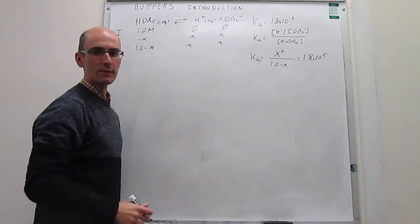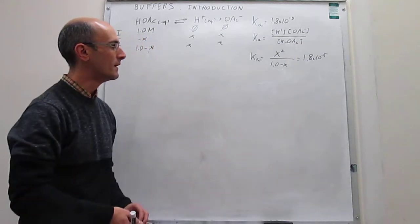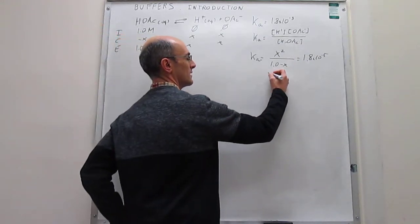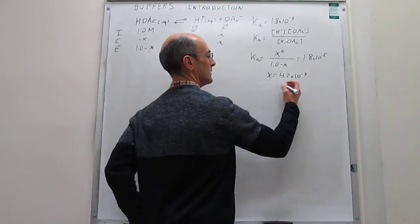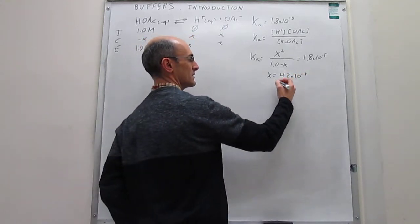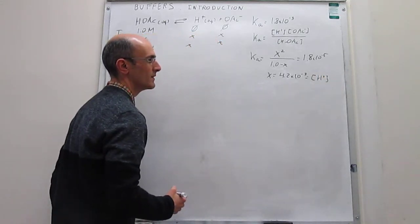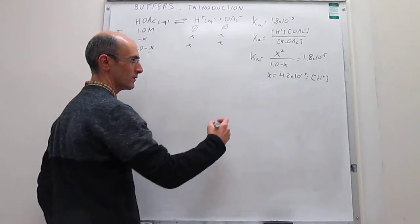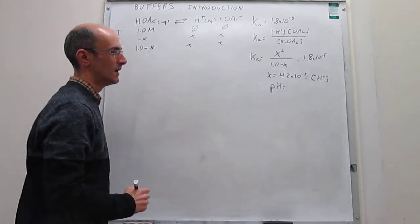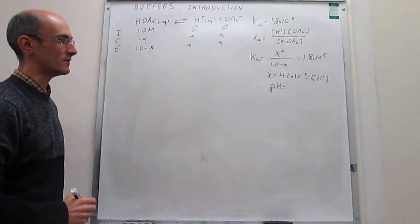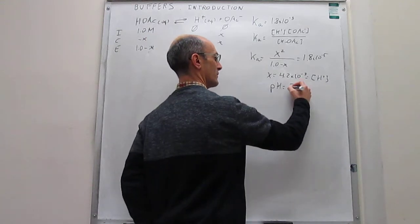We can use the approximation of neglecting x with respect to 1.0 because the equilibrium constant is quite low. We find that x is equal to 4.2×10⁻³, which is the same as the concentration of protons at equilibrium. We can calculate the pH by taking the negative base-10 logarithm of that number, and that equals 2.38.